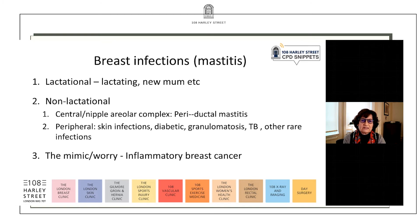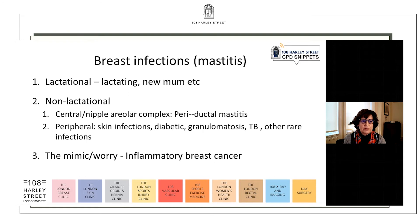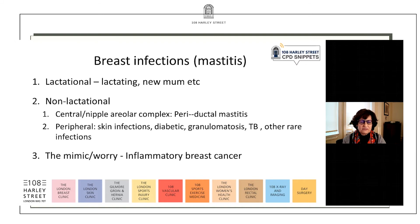It's fairly straightforward to classify breast infections or mastitis into lactational and non-lactational. Lactational means that you've got a new mum who's lactating. Non-lactational can sometimes be the more complex and more difficult to treat, and I tend to view those as infections that are in the central part of the breast around about the nipple areola complex — behind it or around it — and this is often termed perioductal mastitis. Then you've got the more peripheral infections which tend to lie outside the nipple areola complex area, and there can be a myriad of different reasons for these more peripheral types of mastitis or breast infections.